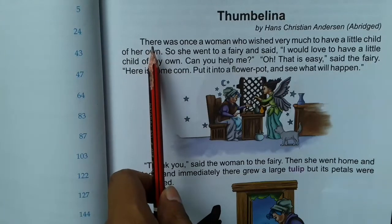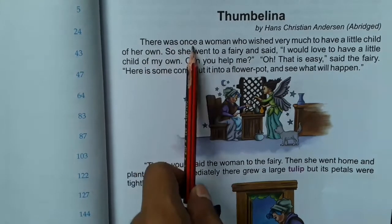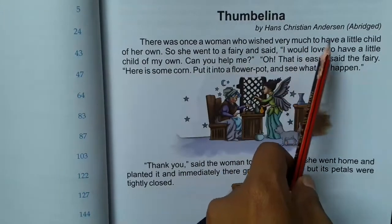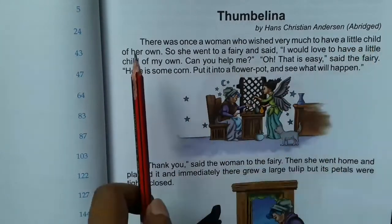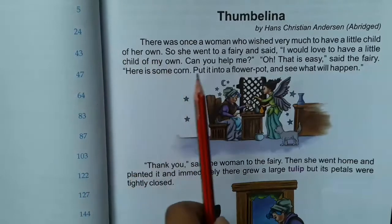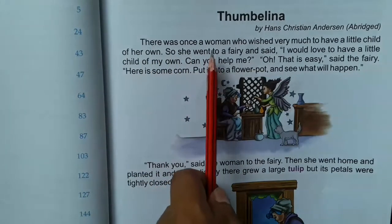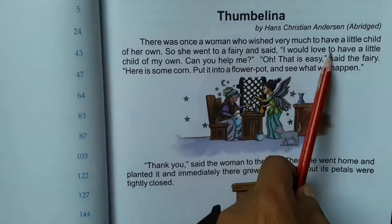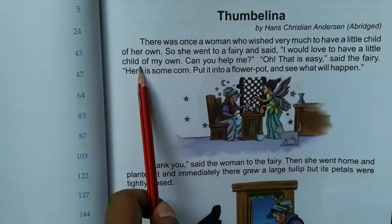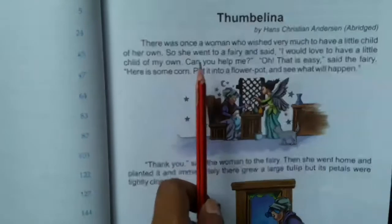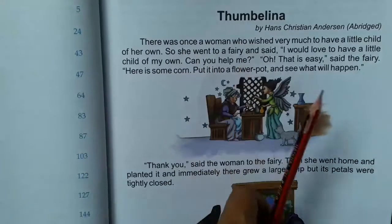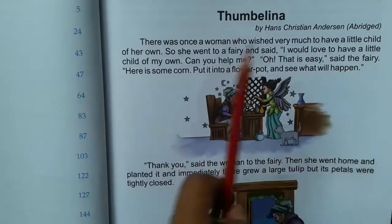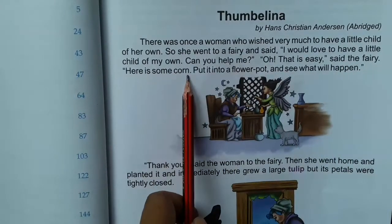There was once a woman who wished very much to have a little child of her own. So she went to a fairy and said, 'I would love to have a little child of my own. Can you help me?' 'Oh, that is easy,' said the fairy. 'Here is some corn.'